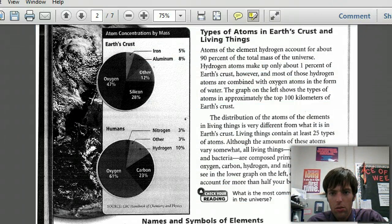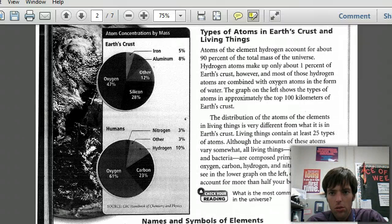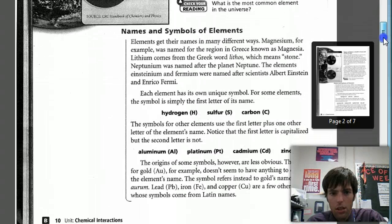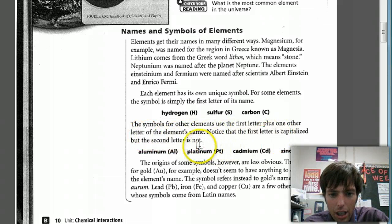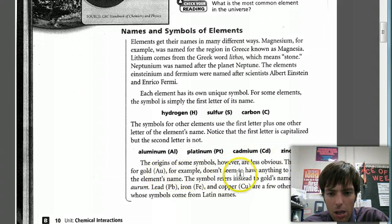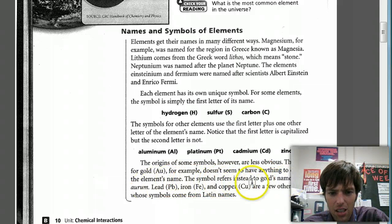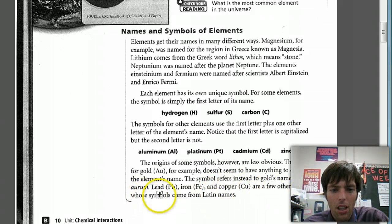Next section. Names and symbols of elements. Elements get their names in many different ways. Magnesium, for example, was named for the region in Greece known as Magnesia. Lithium comes from the Greek word lithos, which means stone. Neptunium was named after the planet Neptune. These elements, Einsteinium and fermium, were named after scientists Albert Einstein and Enrico Fermi. Each element has its own unique symbol. For some elements, the symbol is simply the first letter of its name - hydrogen, sulfur, carbon. The symbols for other elements use the first letter plus one other letter of the element's name. Notice that the first letter is capitalized, but the second letter is not. Aluminum is AL, platinum PT, cadmium CD, zinc ZN. The origins of some symbols, however, are less obvious. The symbol for gold, AU, for example, doesn't seem to have anything to do with the element's name. This symbol refers instead to gold's name in Latin, Aurum. Lead PB, iron FE, and copper CU are a few other elements whose symbols come from Latin names.